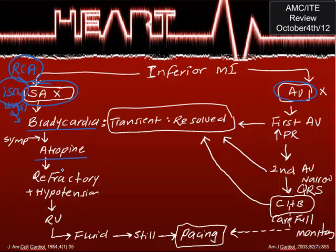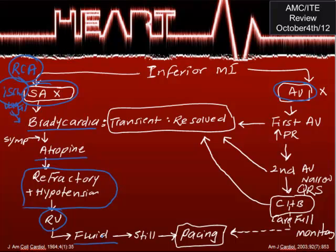If bradycardia is refractory even after atropine and the patient has hypotension, you need to think about another differential. It could be right ventricular infarction or simply hypotension. In either case, the treatment of choice is fluids.